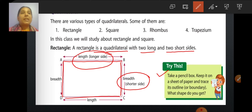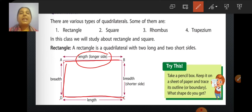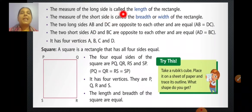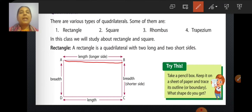In rectangle ABCD, AB and DC are the longer sides and are called the length of the rectangle, whereas AD and BC are the shorter sides and are called the breadth or width of the rectangle. The two long sides AB and DC are opposite to each other and equal — AB equals DC. Similarly, AD and BC are also opposite and equal in length, being the breadth of the rectangle.